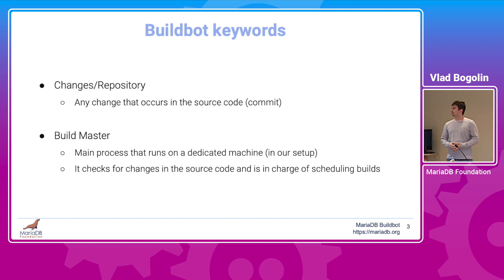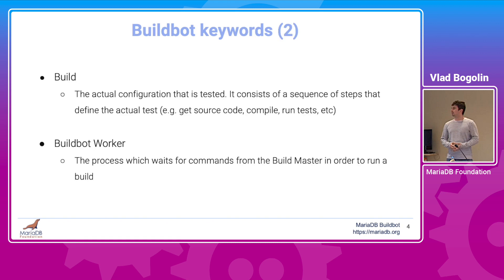Let's first define some keywords I will use in the presentation. By 'changes repository' I refer to the actual source code changes — commits pushed to the MariaDB Server GitHub repository. The 'build master' refers to the main BuildBot process. In our case this process runs on a dedicated physical machine; its job is to look for changes in the repository and schedule builds. A 'build' defines the actual tested configuration — a sequence of steps such as getting the source code, compiling MariaDB Server, and running all its tests.